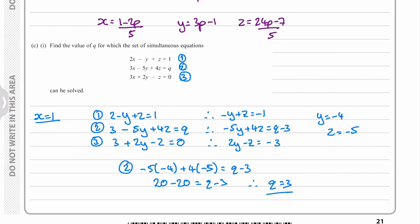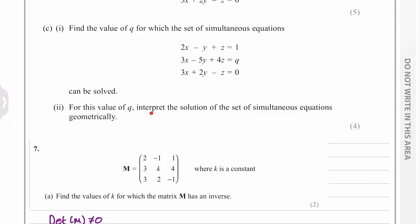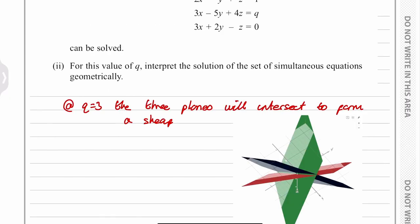And then for the last part of the question, for this value of q interpret the solution of the set of simultaneous equations geometrically. So we've already mentioned that at q equals three the three planes will intersect to form a sheaf.